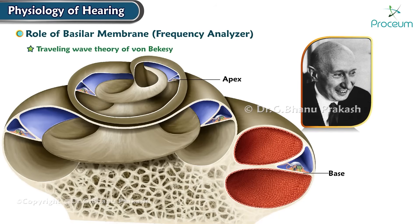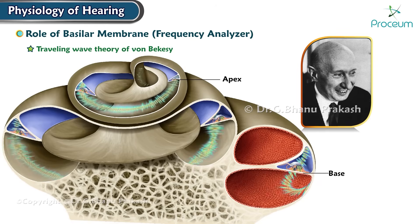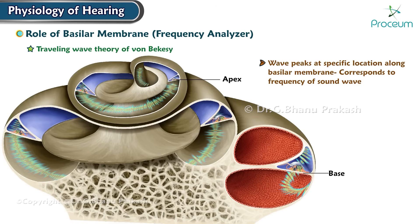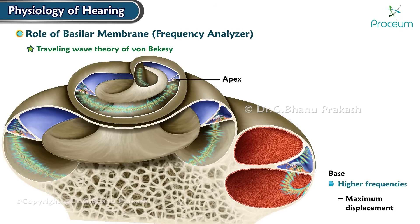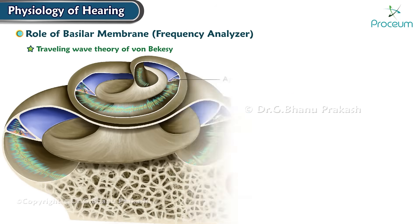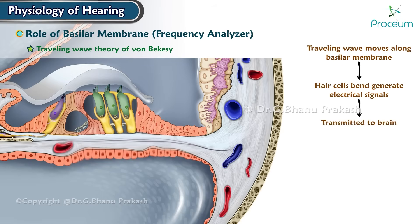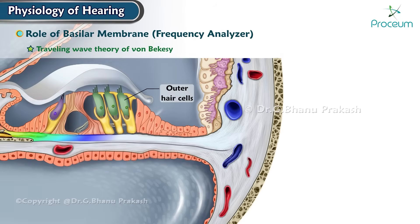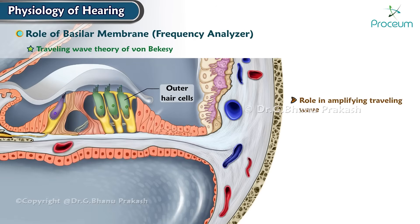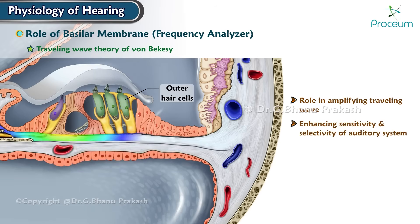According to the Traveling Wave Theory of Von Bekesy, when sound waves enter the cochlea, they create a traveling wave that moves along the basilar membrane from the base near the oval window to the apex. The wave peaks at a specific location corresponding to the frequency of the sound wave, with higher frequencies causing maximum displacement near the base and lower frequencies near the apex. As the traveling wave moves, it causes the hair cells to bend and generate electrical signals. The outer hair cells play a critical role in amplifying the traveling wave and enhancing the sensitivity and selectivity of the auditory system.